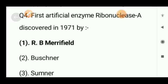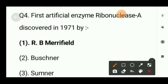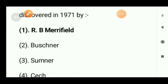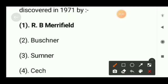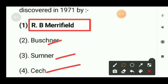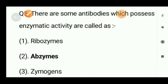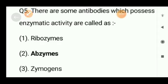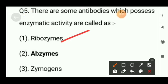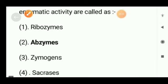Next question: the first artificial enzyme ribonuclease A, discovered in 1971, was synthesized by — RB Merrifield, Buchner, Sumner, or Keck? The right option will be option A, that is RB Merrifield.